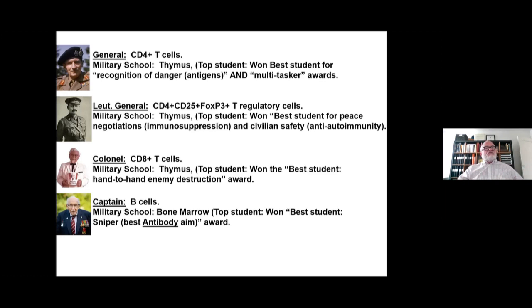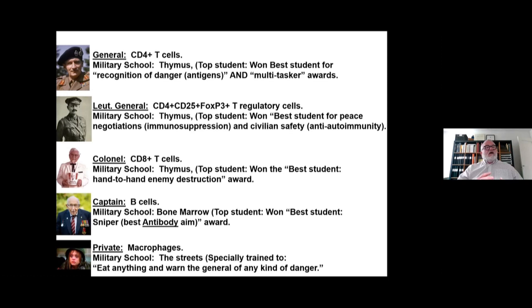Lastly, there are the privates — these are the macrophages. The macrophages didn't really go to military school; they learned their craft on the streets. They are all over our body — they line our blood vessels, they're found in the spleen, and in all the different lymphoid tissues. They're specifically trained to eat anything that comes around, and they're the important cells that communicate with the general and warn the general of danger. They're kind of like garbage cans: they eat everything and then tell the general there are problems.